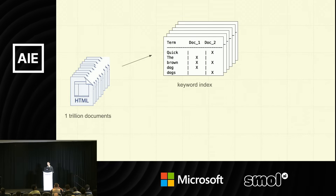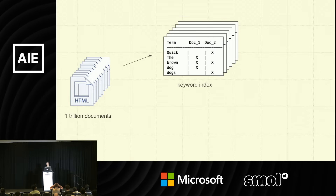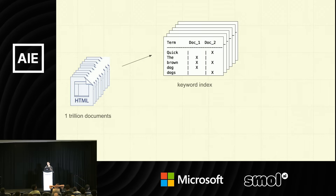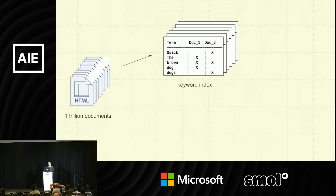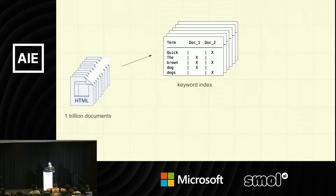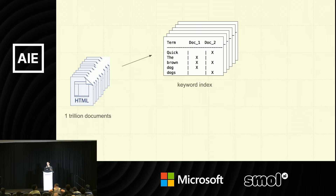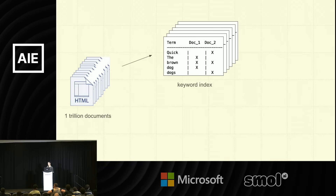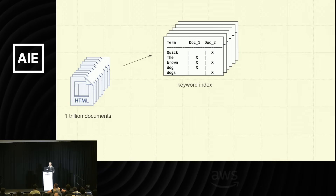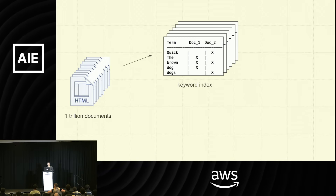At search time, when a query like 'shirts without stripes' comes in, you do some keyword comparison algorithm and get the top results. That's obviously a simplification of what Google does, but at a fundamental level it's doing a keyword comparison.